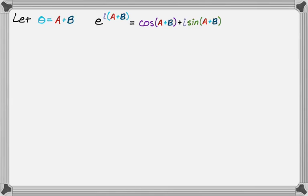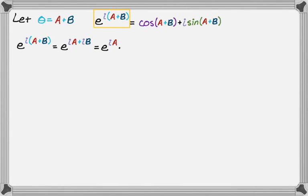Working on the left-hand side: e to the i times quantity a plus b equals e to the i·a plus i·b. Now using the exponent property in reverse, e to the i·a plus i·b is the same as e to the i·a times e to the i·b — same base, adding exponents means we can split it into a product. We then apply Euler's formula to each factor.